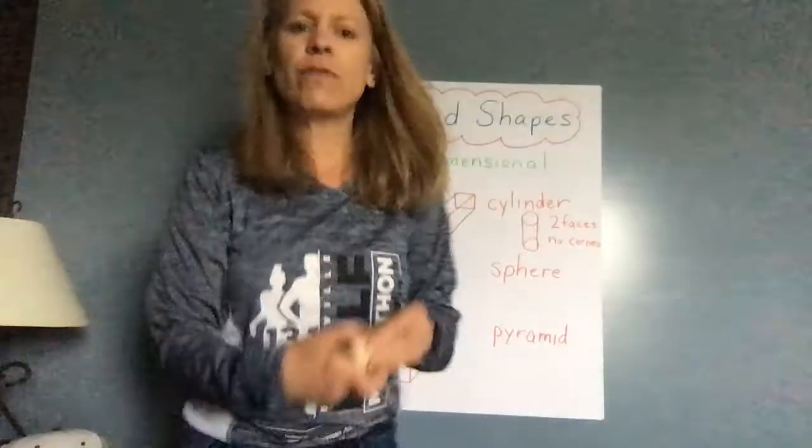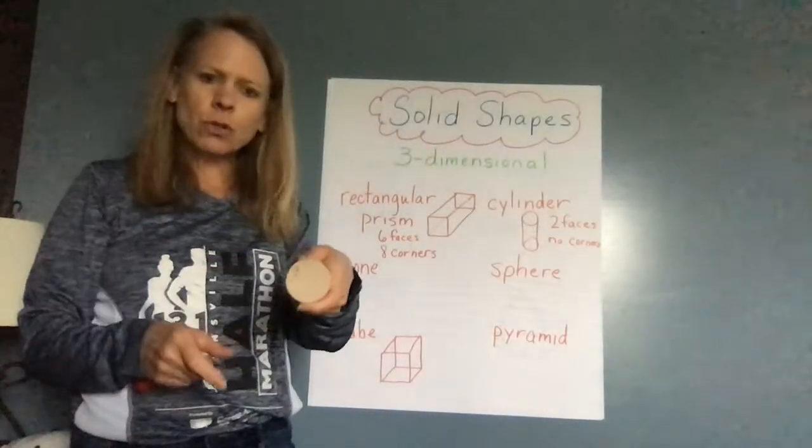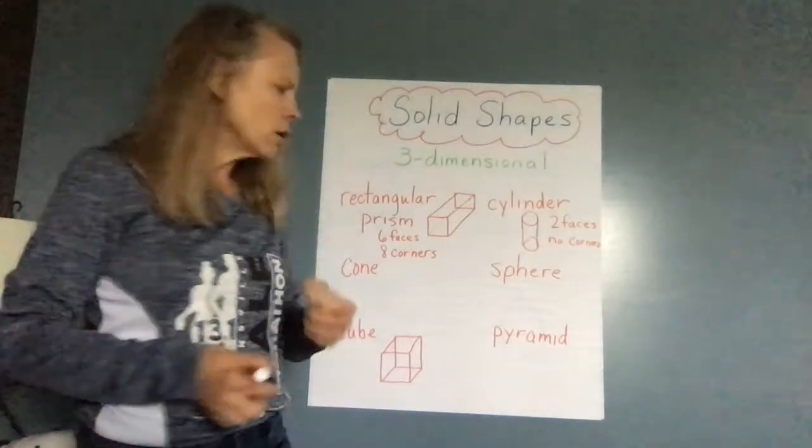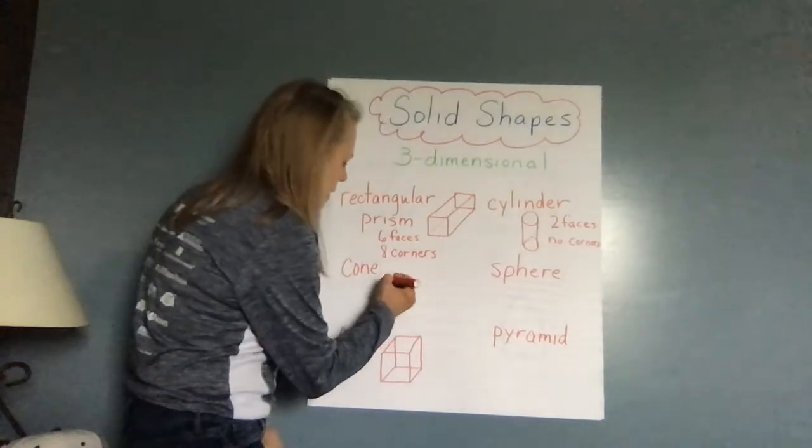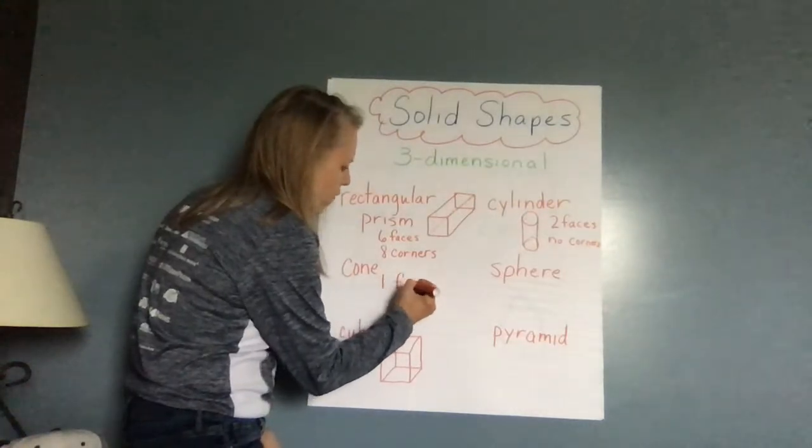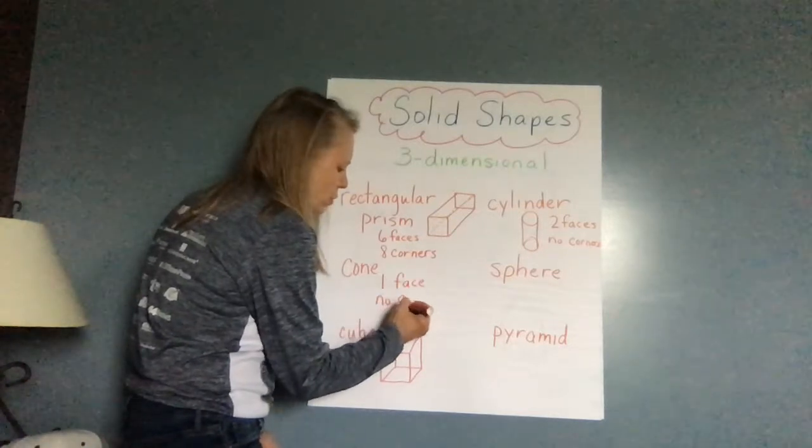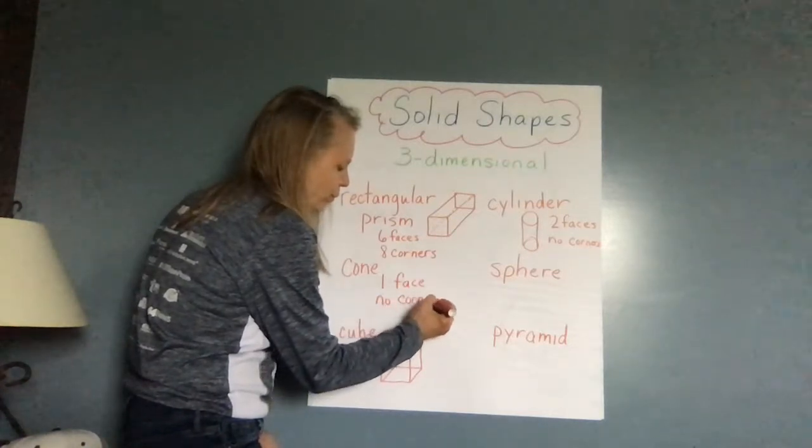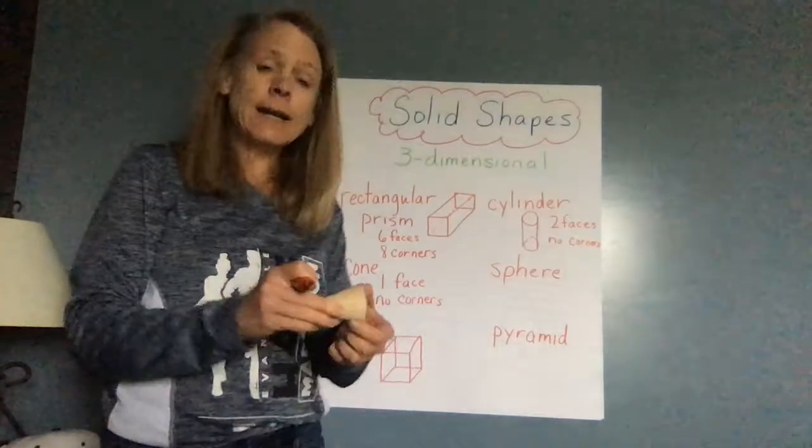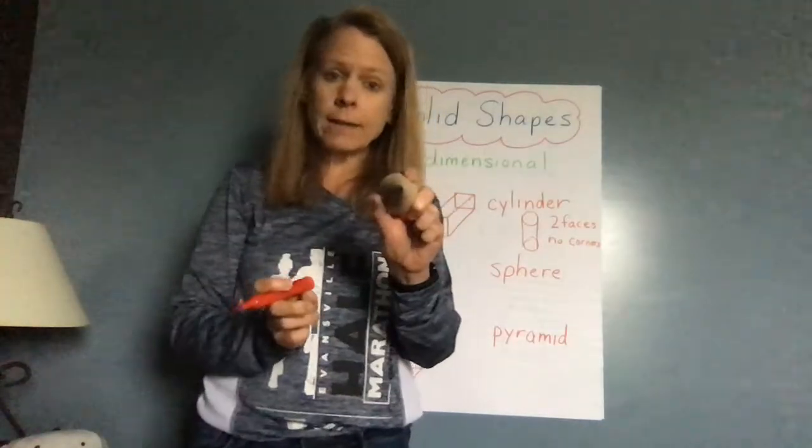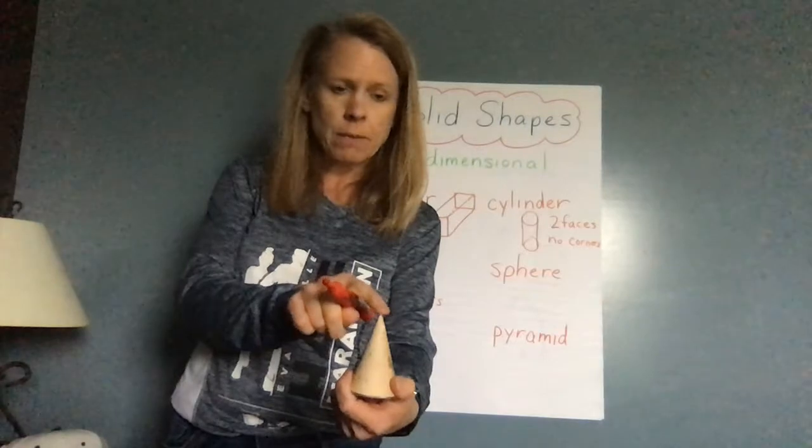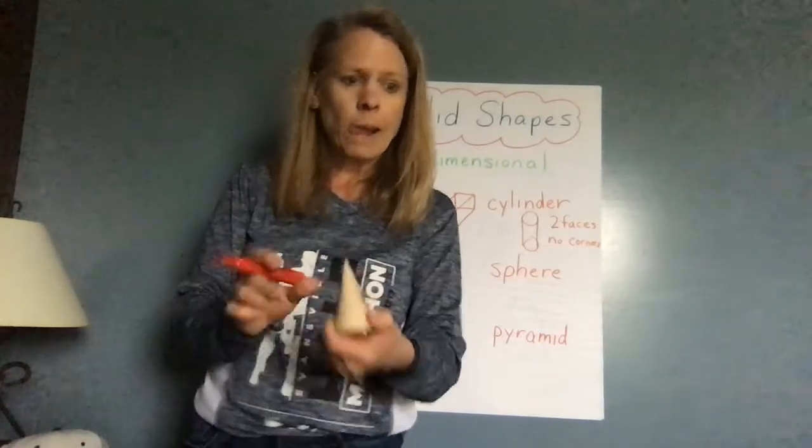One face. And that face is what? The face is a circle. The face of a cone is a circle. So it has one face. And that face is a circle. It has no corners. It does come to a point at the top. Comes to a point.